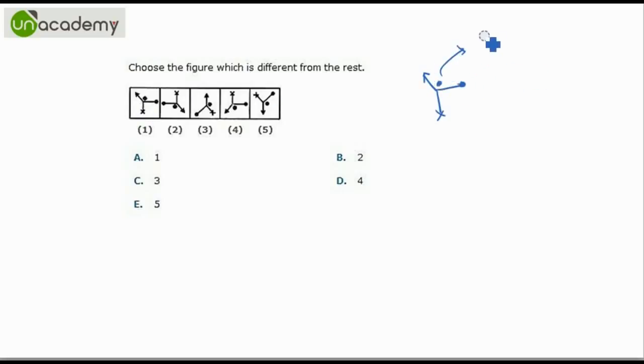We observe the pattern. The dot is in between the arrow and another dot. This figure is following this rule, this figure is following, this is not following, this is following and this is following. So simply we get the answer very quickly. The figure that is not following has the dot between arrow and X. So the correct answer is option C.